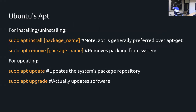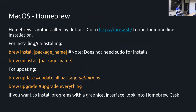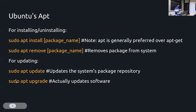On Ubuntu you have 'sudo apt install package-name' and remove with 'sudo apt remove package-name'. The updating process on both Ubuntu and Mac requires 'sudo apt update' first, then 'sudo apt upgrade'. The distinction is that 'sudo apt update' actually updates the system package repository — your computer's record of what the latest version of software is — before actually upgrading the software.